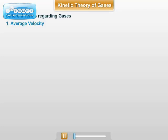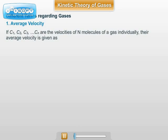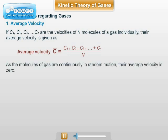Different molecules move with different velocities. If C1, C2, C3 ... Cn are the velocities of n molecules of the gas individually, their average velocity is given as C bar = (C1 + C2 + C3 + ... + Cn) / n. As the molecules of the gas are continuously in random motion, this average velocity is zero.